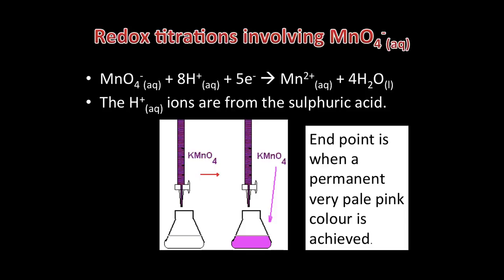The manganate ion has an oxidation state of +7. This ion is a very powerful oxidising agent as it gains electrons to form Mn2+. In order for this reaction to take place, it needs to be acidified by adding sulphuric acid to provide H+ ions. The half equation for the reduction is MnO4- + 8H+ + 5e- → Mn2+ + 4H2O. Usually the MnO4- solution is added from the burette and the end point is when the colourless solution in the conical flask turns to a permanent very pale pink colour.